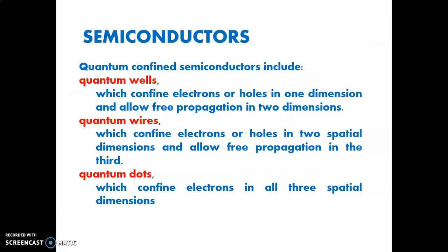In semiconductors, quantum confined semiconductors include quantum wells, quantum wires, and quantum dots. Quantum wells confine electrons or holes in one dimension and allow free propagation in the other two dimensions. Quantum dots confine electrons in all three spatial dimensions.